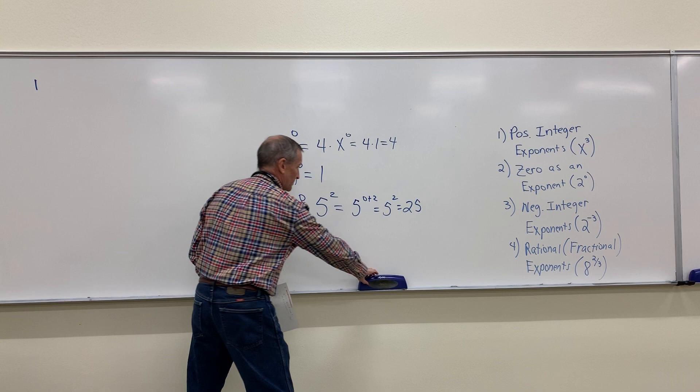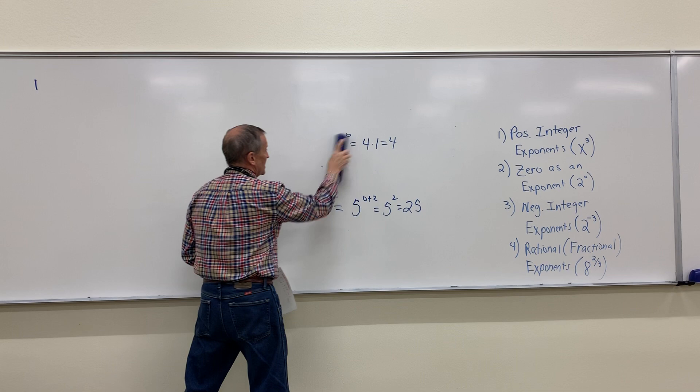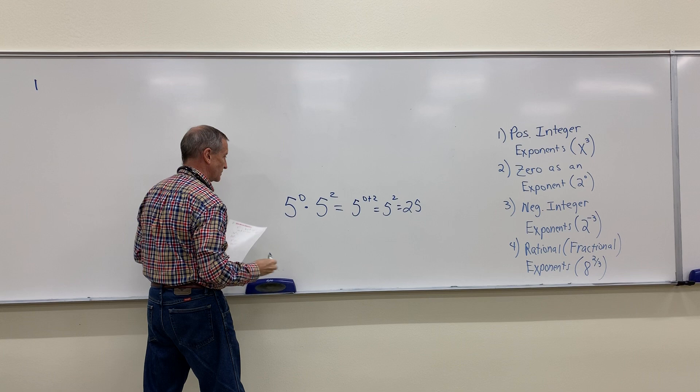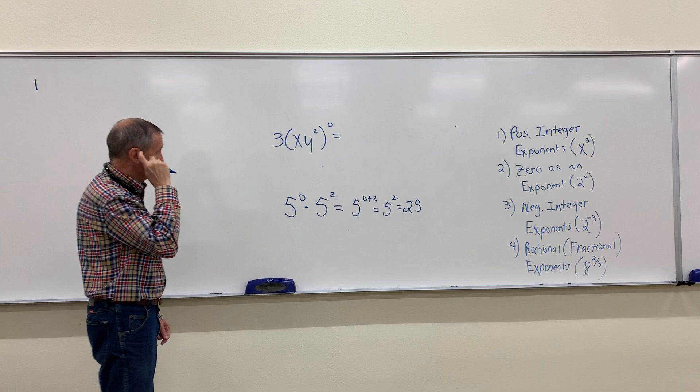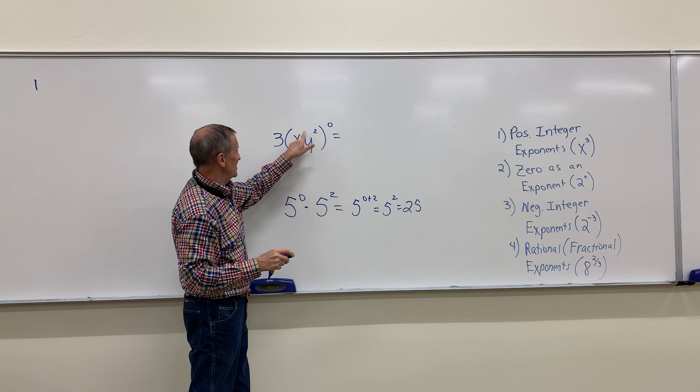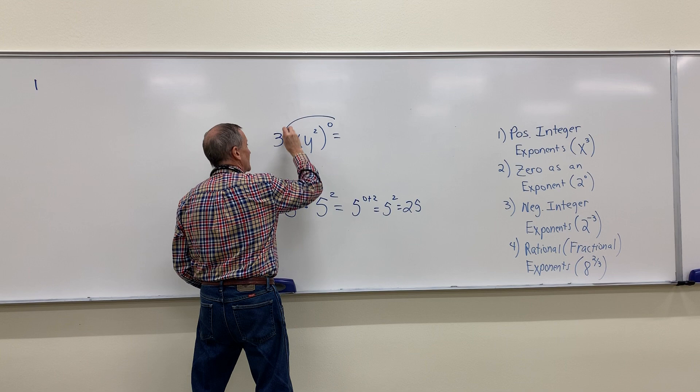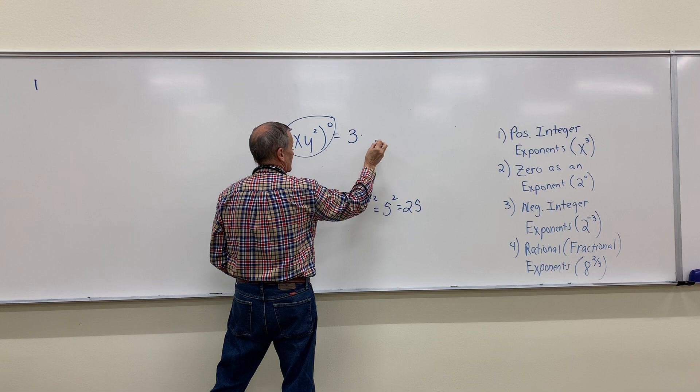Try one more before we look at negative integer exponents. Working this expression, you could multiply the outer exponent by the inner exponents, or you could simply say anything to the zero power is just going to be one. So this means three times one, which means three.